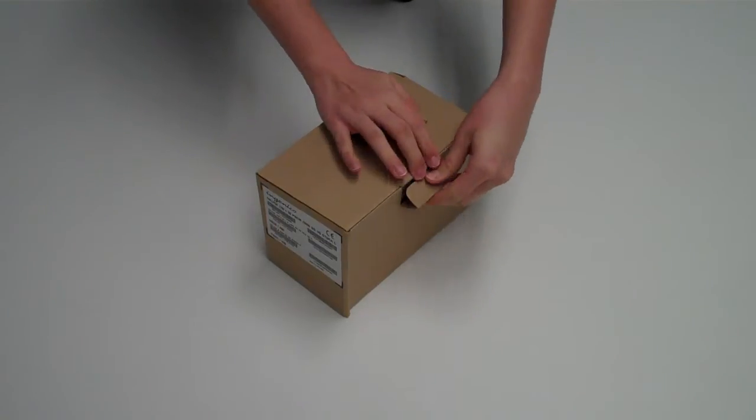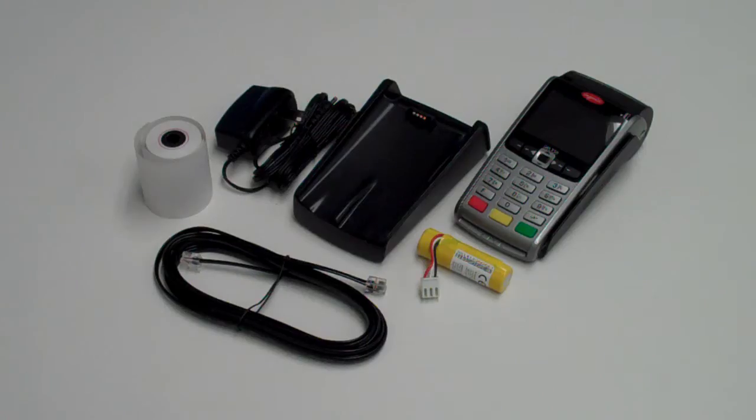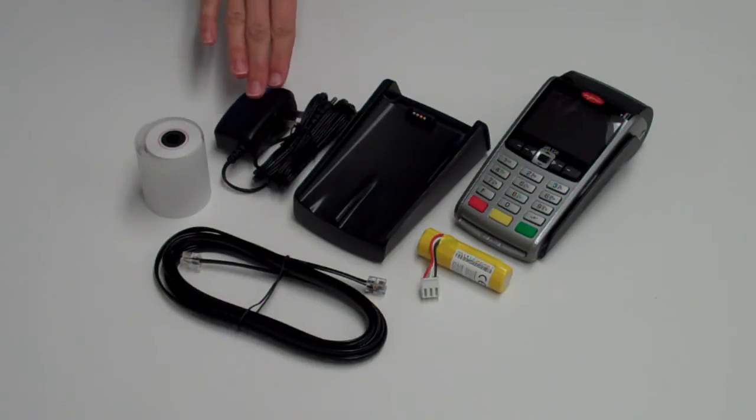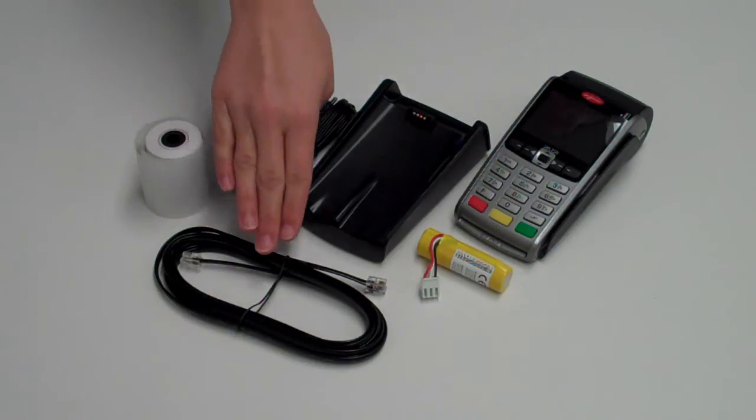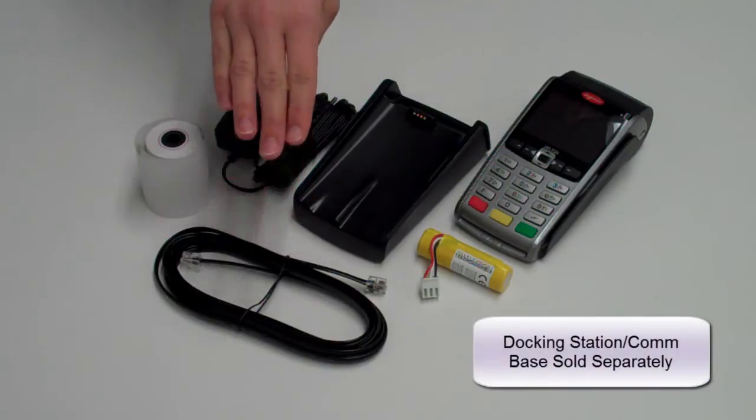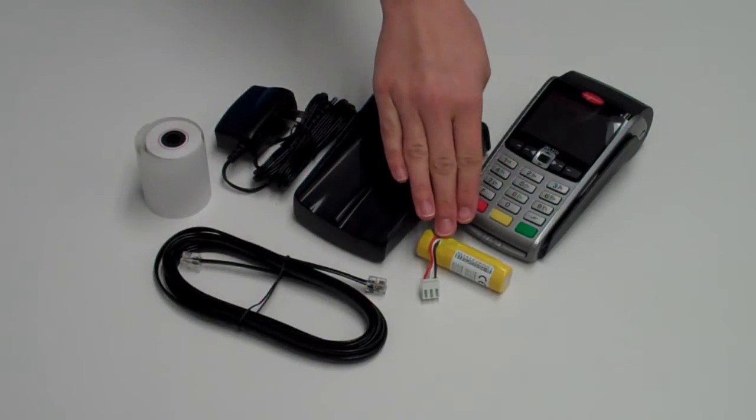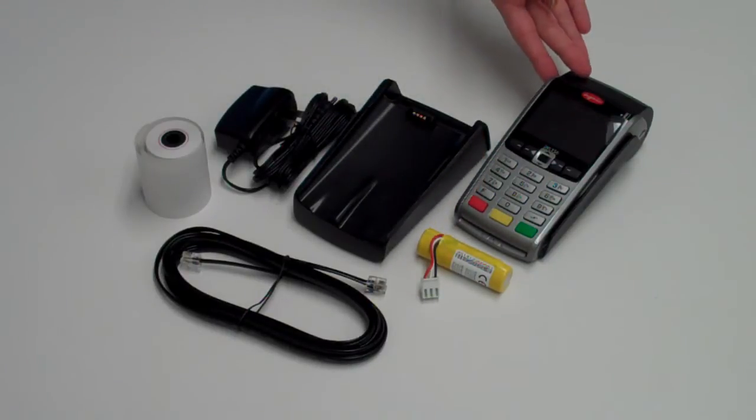Open up the box and empty the contents. Inside the box you'll find the following items: a paper roll, a power supply, a phone cable, a docking station, a lithium ion battery, and the terminal itself. You'll also find a user's guide.